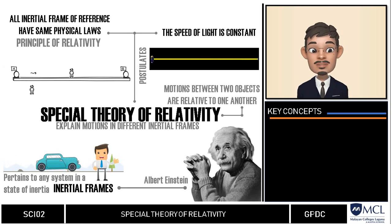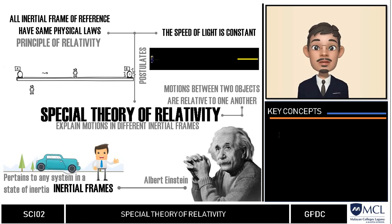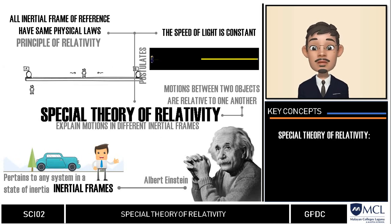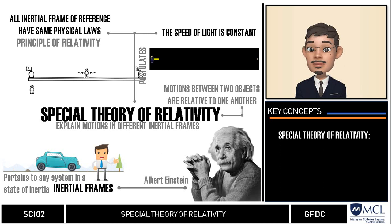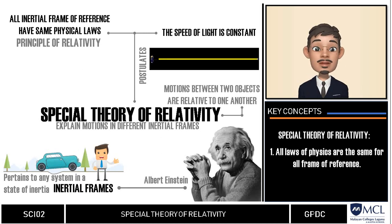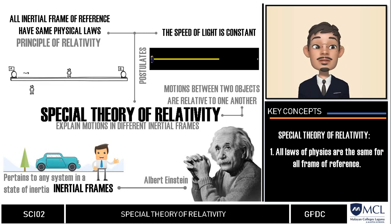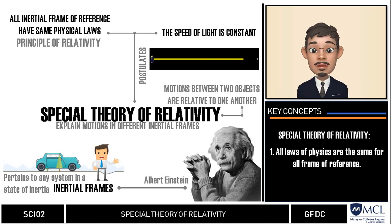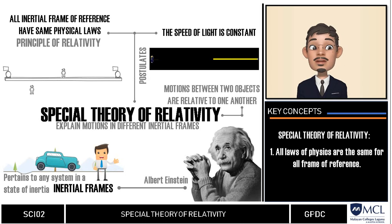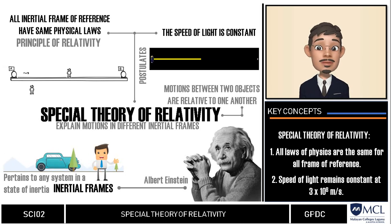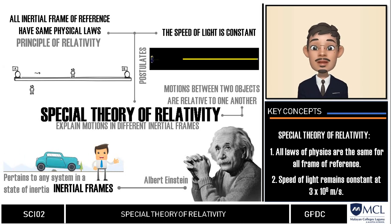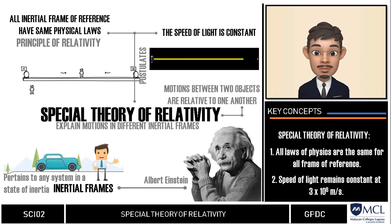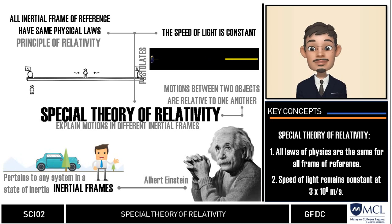To recap, the two postulates of the special theory of relativity are: first, all laws of physics are the same for all frames of reference; and second, the speed of light remains constant at 3 times 10 to the 8 meters per second.